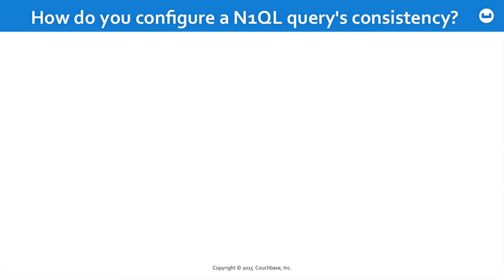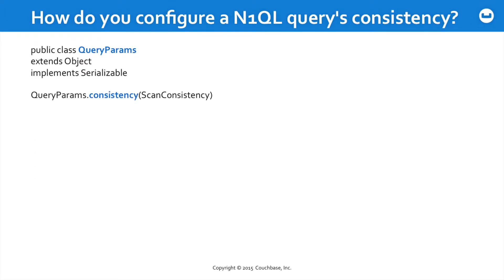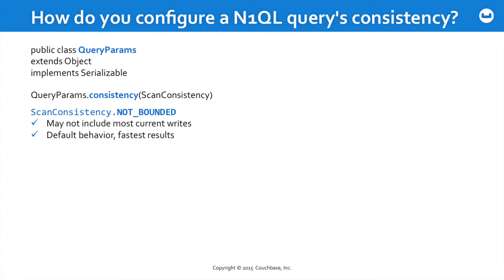We need to take a side trip into the notion of query parameters. There's a core concept that you just don't want to go without — consistency. One of the aspects of query behavior that you can configure through the QueryParams object is the consistency to be enforced for a particular query. You can set the consistency to NOT_BOUNDED, which is the default behavior and gives the fastest results, but it means that your results may not include the most current writes.